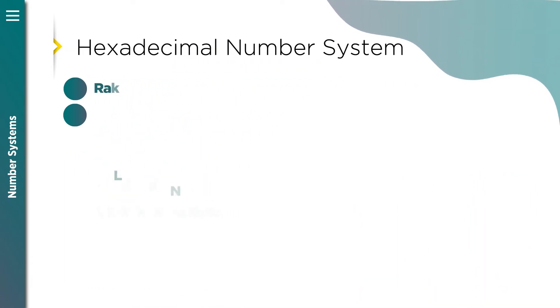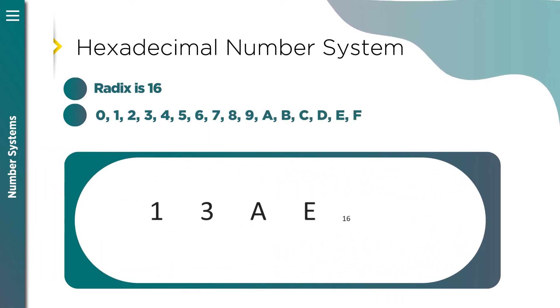Hexadecimal number system has radix 16 and 16 digits from 0 to 9, and after that we use letters A, B, C, D, E, F, which according to the decimal number system equal 10, 11, 12, 13, 14, 15 respectively.